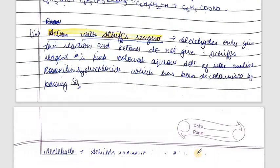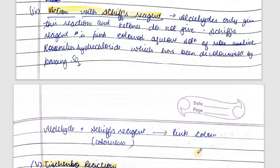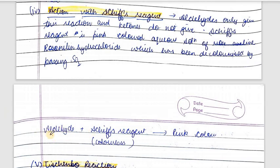Next is the action with Schiff's reagent. Only aldehydes give this reaction — ketones do not. In this test, the pink-colored aqueous solution of rosaniline hydrochloride decolorized by passing SO₂ is used. When aldehydes are treated with Schiff's reagent, the pink color is restored. This shows the presence of aldehydes, because only aldehydes give this reaction.